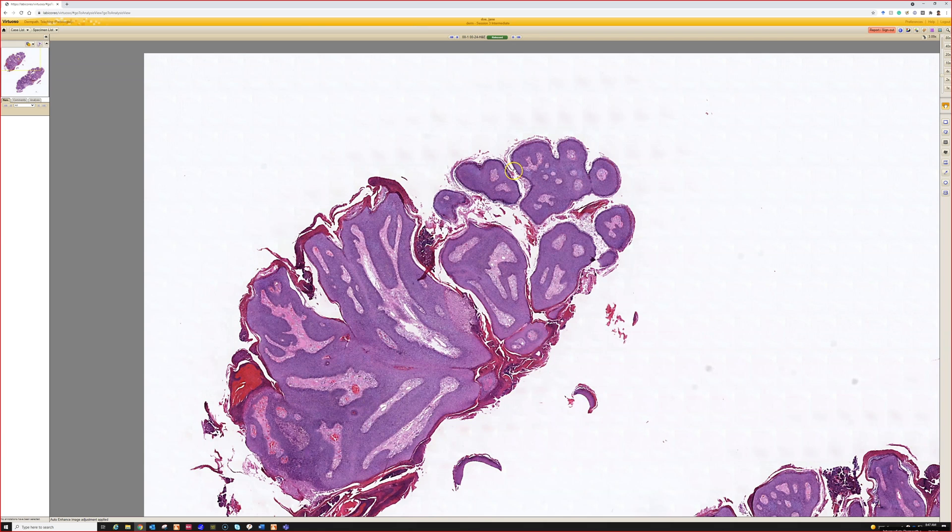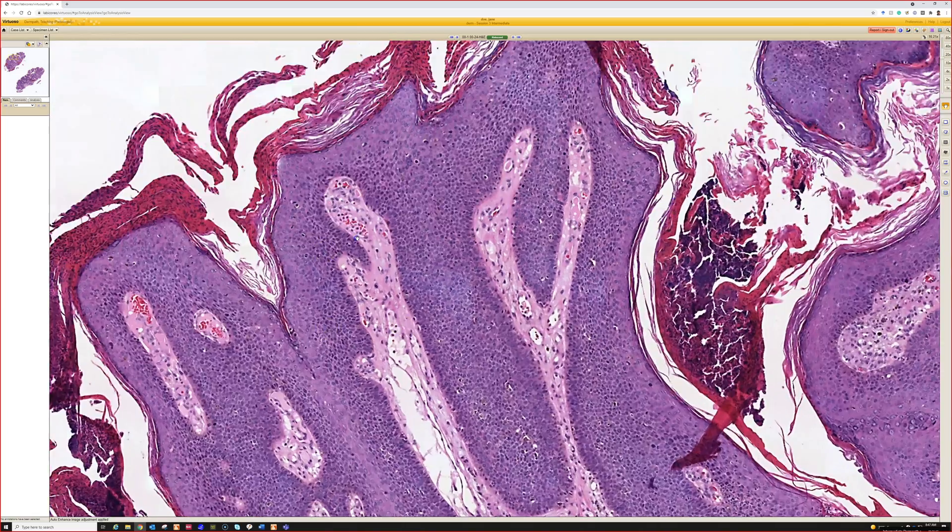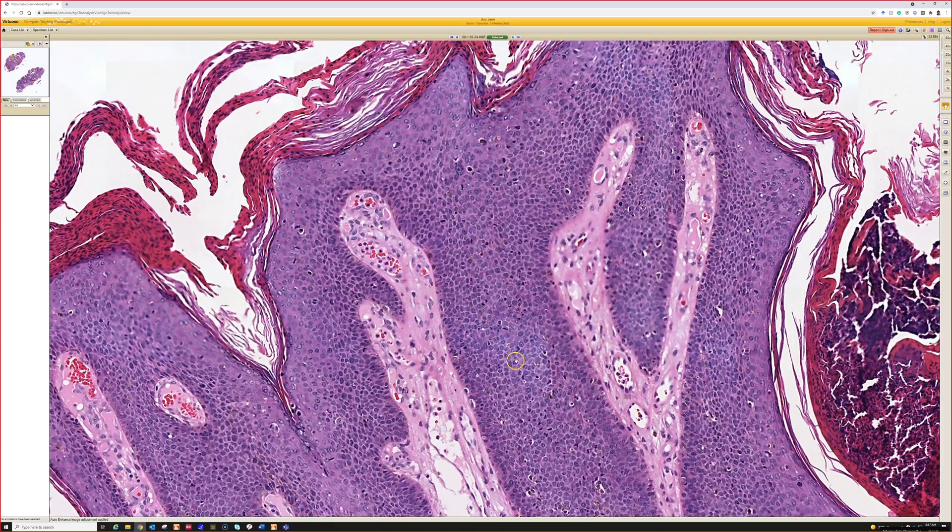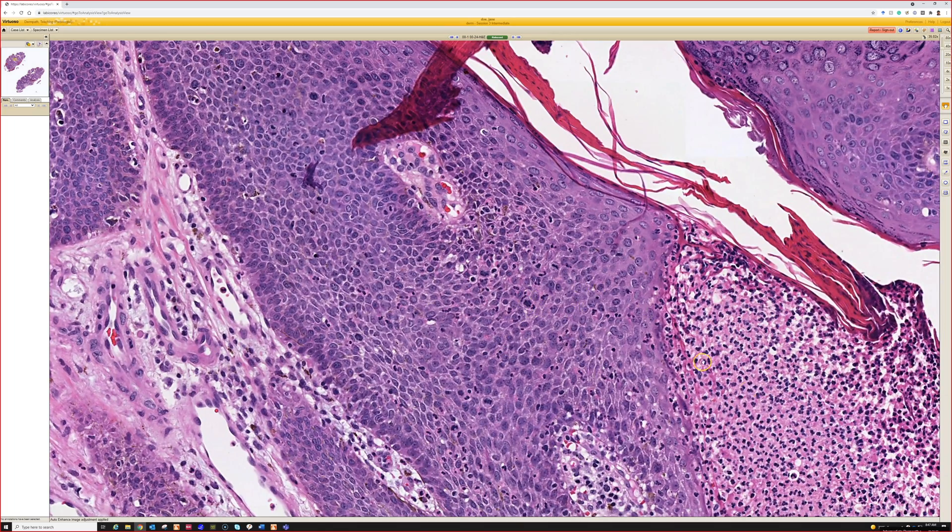And here this thing looks kind of almost like a polypoid seborrheic keratosis. But when we go closer, very blue basaloid atypical cells, lots of mitoses in here.